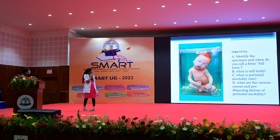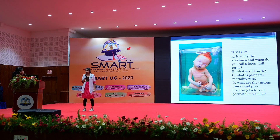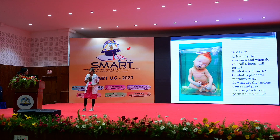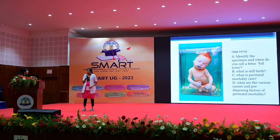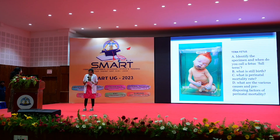This specimen is a term placenta. Full term is when babies are delivered between 37 and 42 weeks. Before 37 weeks it is called preterm, and after 42 weeks it is post-term. Stillbirth is when a baby is delivered with no signs of life after the period of viability. Perinatal mortality rate is defined as late fetal and early neonatal death of babies weighing more than 1000 grams per 1000 live births. Causes include birth asphyxia, hypoxia, infections, and congenital malformations.